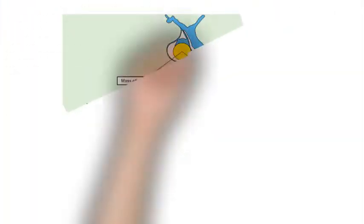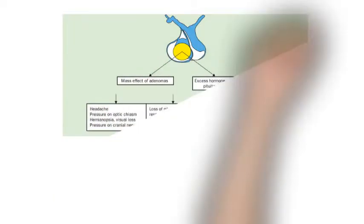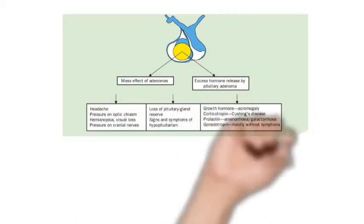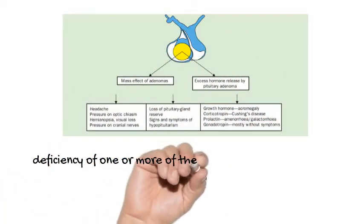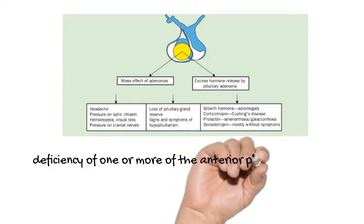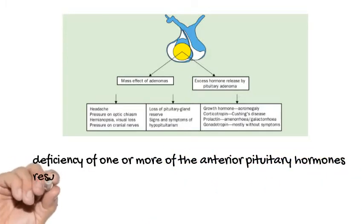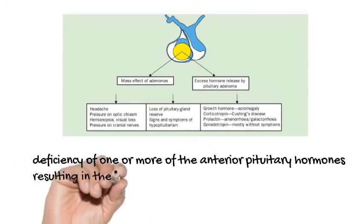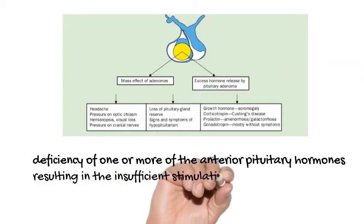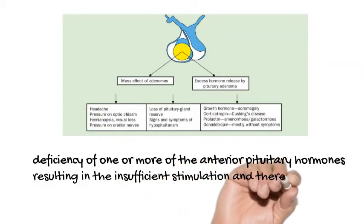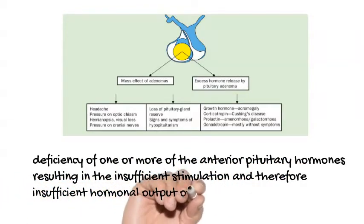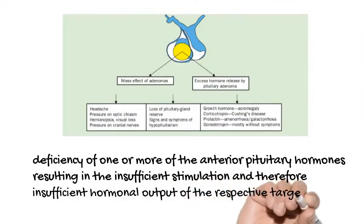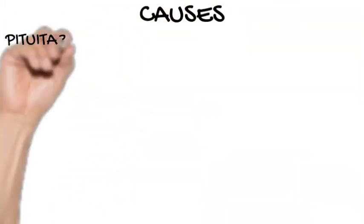Hypopituitarism is the deficiency of one or more of the anterior pituitary hormones, resulting in insufficient stimulation and therefore insufficient hormonal output of the respective target glands. The target gland dysfunction is referred to as secondary deficiency, indicating that the pituitary gland is the source of the problem.